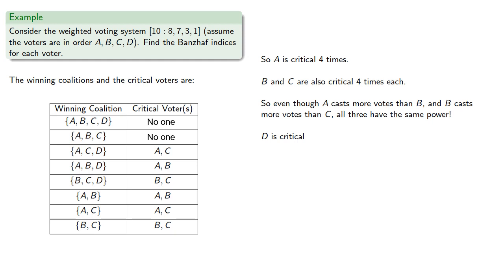And D is critical never. So even though D has a vote, their vote is completely irrelevant.